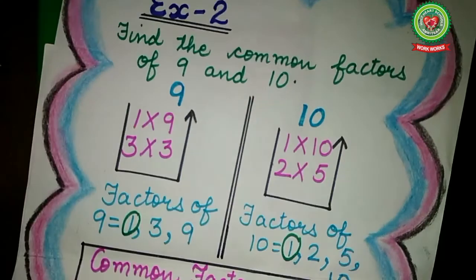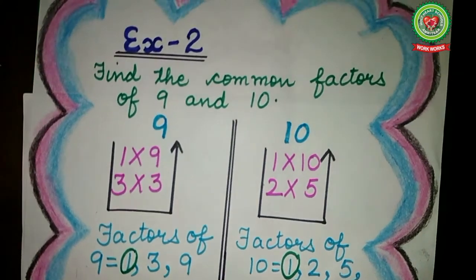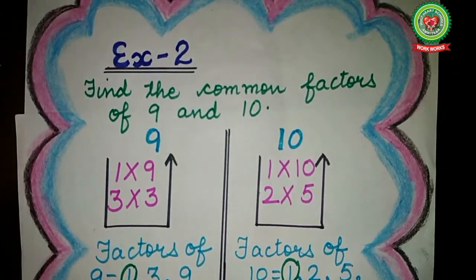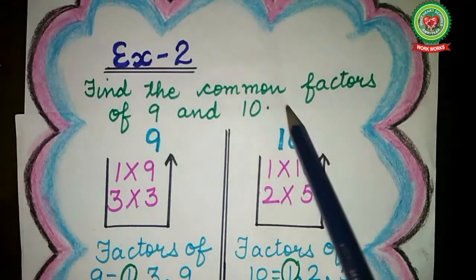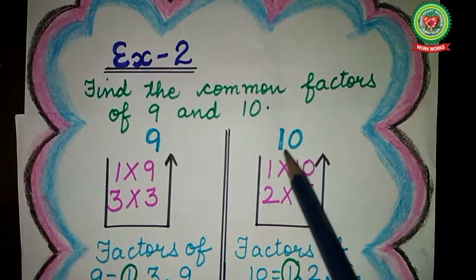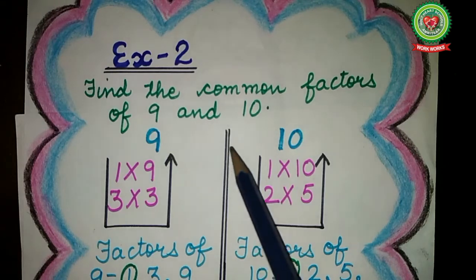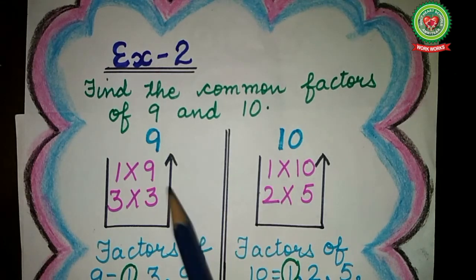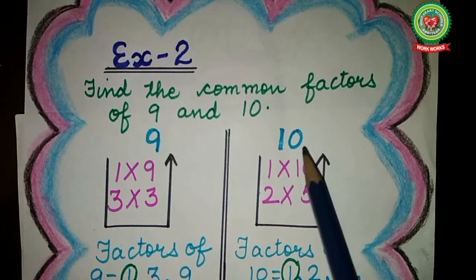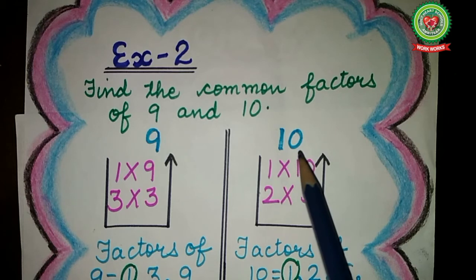Example number 2: find the common factors of 9 and 10. Again I have to find common factors. In between, draw one partition line — left side I will find factors of 9, right side I will find factors of 10.